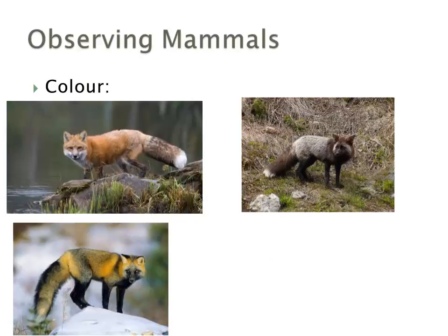Colour is also important and there are different morphs. For example, these are all red foxes, but one of them is the red, one is the black, and one is the cross morph. There are different colour patterns between species but also within species, which allows us to compare and identify the animal we're seeing.